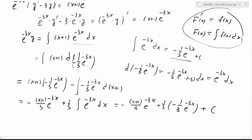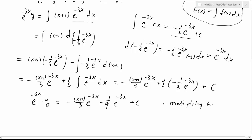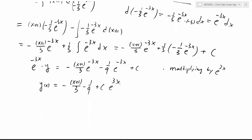So to conclude, we have e to the negative 3x times y equal to negative (x plus 1) over 3 times e to the negative 3x minus 1 ninth e to the negative 3x plus c. We can simplify by multiplying both sides by e to the 3x. Then the unknown function y of x is solved: it equals negative (x plus 1) over 3 minus 1 ninth plus c times e to the 3x. We must have this constant c, otherwise we don't have the general solution. So this is our general solution.